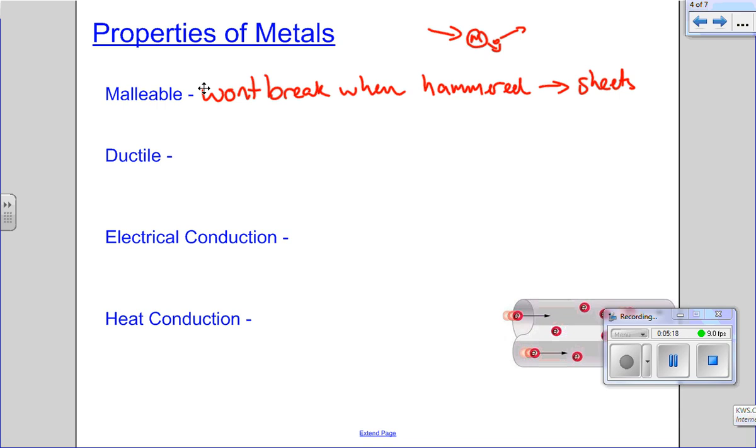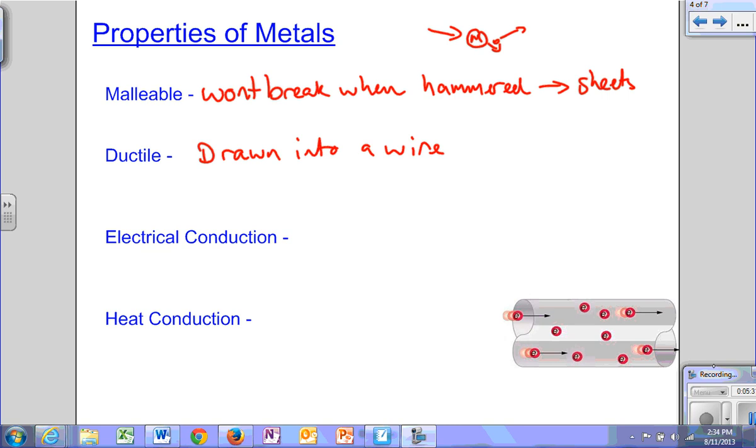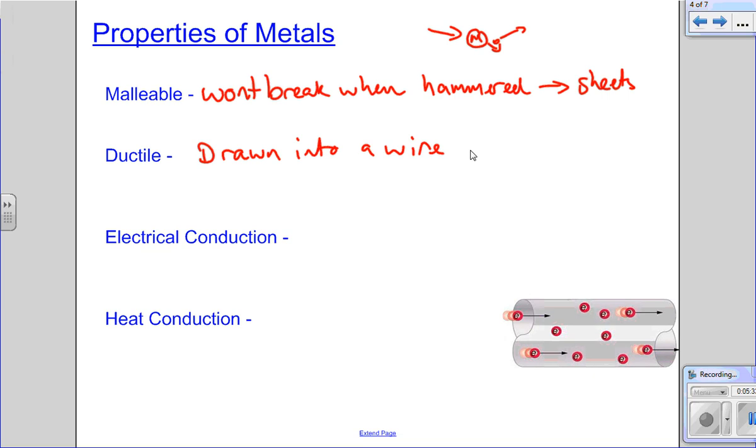Metals are also said to be ductile. This means they can be drawn into the wire. And this is the same thing. As you pull it apart, because the electrons are free to move around, there's flexibility. It doesn't quite break them apart. I mean, eventually it will. It'll get to a point where it won't draw any more and it'll snap it up.